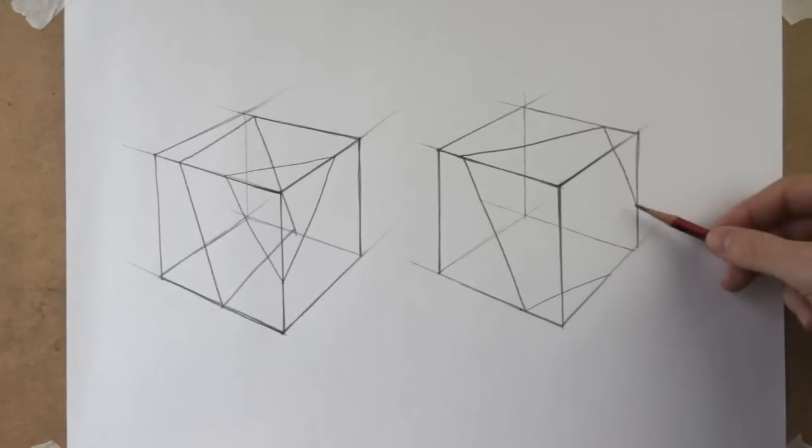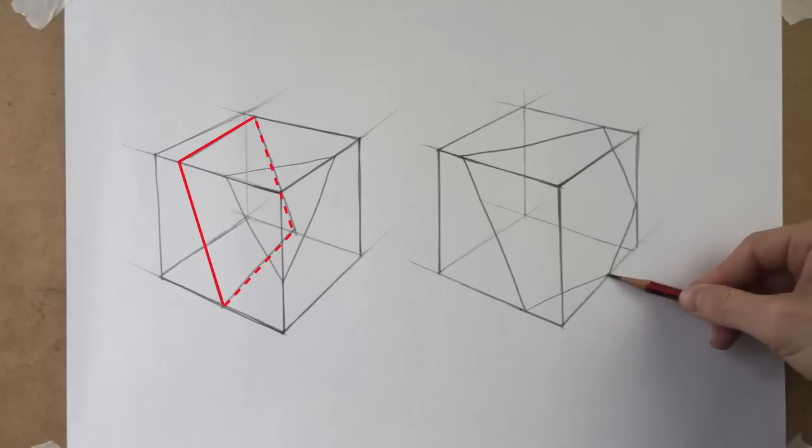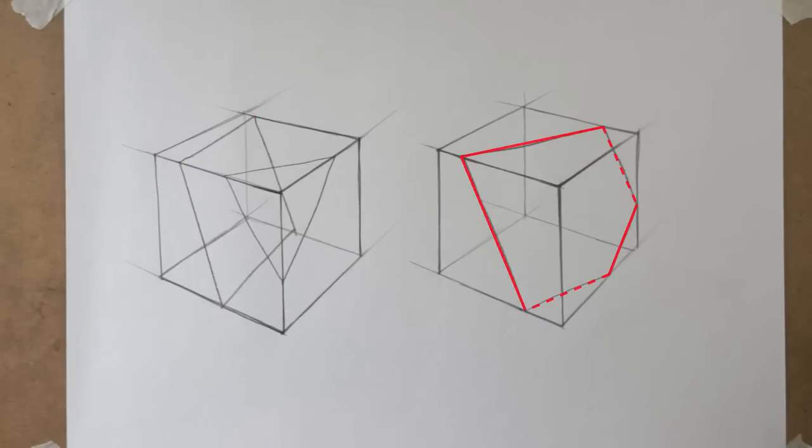By tilting the planes, you can create shapes with three, four, or even five sides.